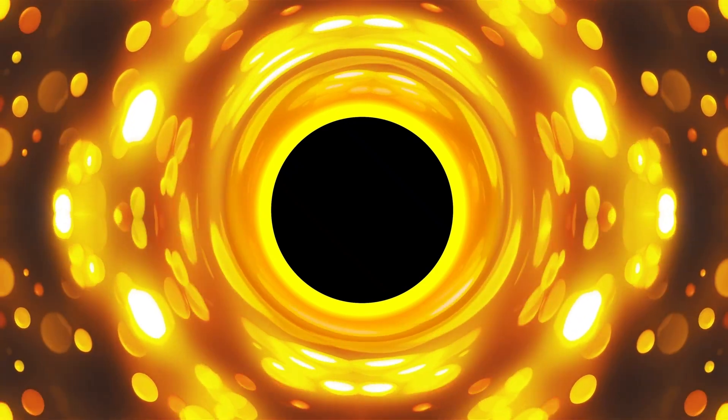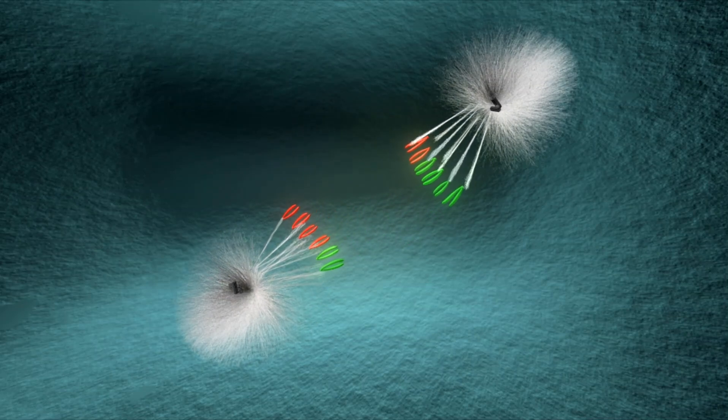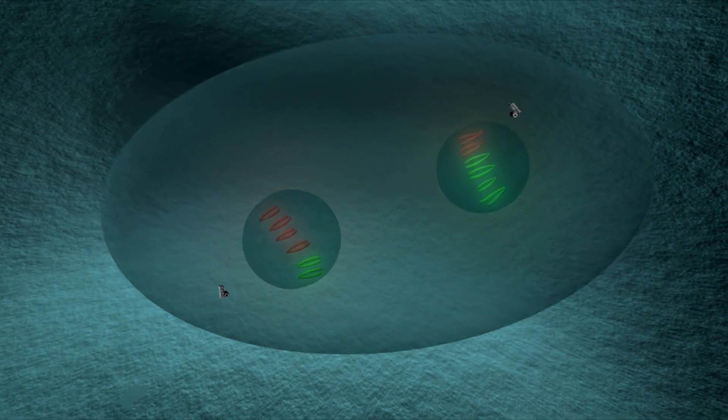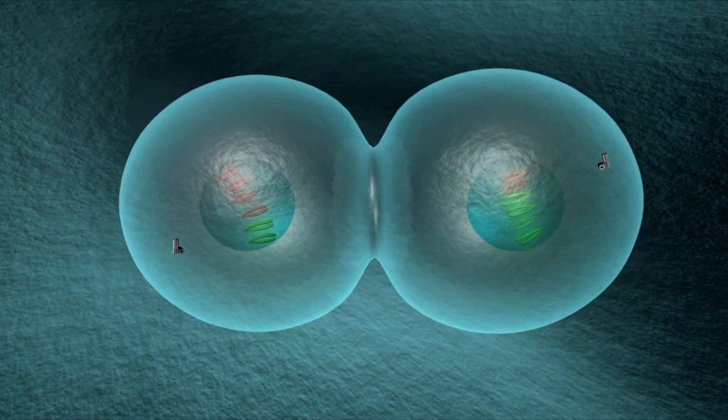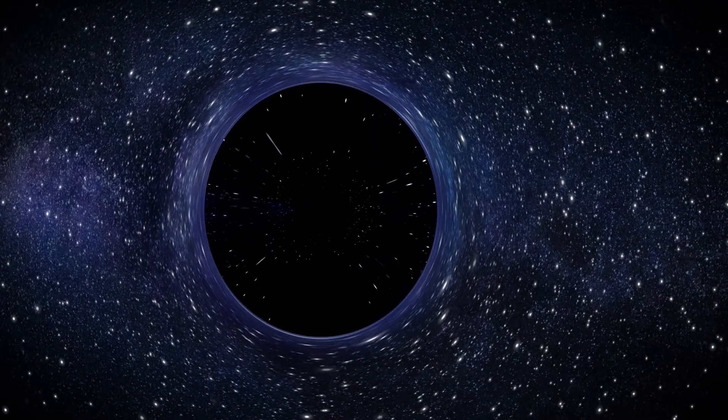The concept of white holes arises from mathematical solutions to Einstein's field equations in general relativity. These solutions suggest the existence of regions of space-time where matter and energy emerge, analogous to how they are drawn into black holes.